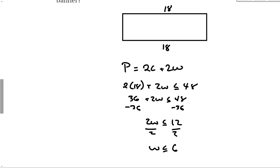So the width must be less than or equal to 6. In order to have a rectangle, the width can't be 0, so it has to be greater than 0 and less than or equal to 6. We'll talk about how to write compound inequalities like that in a later section.